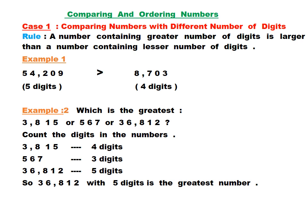Let us see an example. I have written two numbers: 54,209 and 8,703. In 54,209 there are 5 digits, whereas in 8,703 there are 4 digits. According to the rule, the number containing the greater number of digits is larger, so 54,209 is greater than 8,703.